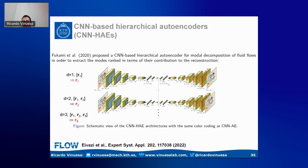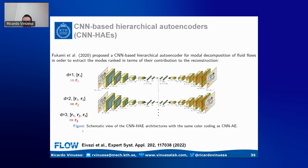There is a framework proposed by Fukami and others from Fukagata's group for hierarchical autoencoders to achieve optimality — modes with decreasing contribution towards reconstruction. You start with one autoencoder with one latent variable, then add a second autoencoder with dimension two, setting the first variable and obtaining the second which has a smaller contribution. Done recursively, you obtain a ranked list of latent vectors with lower and lower contributions. This was tested in a 2D cylinder case but not in turbulent flows — we do it now for turbulent flows.